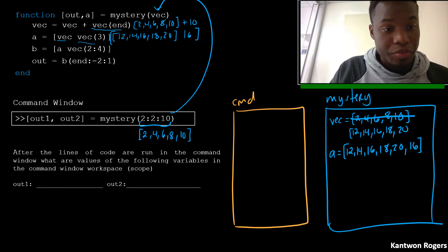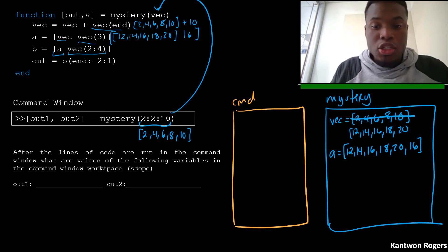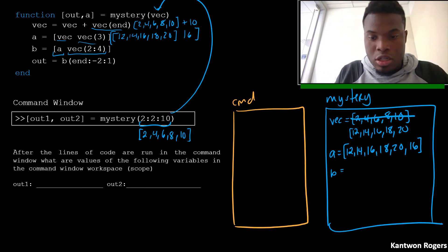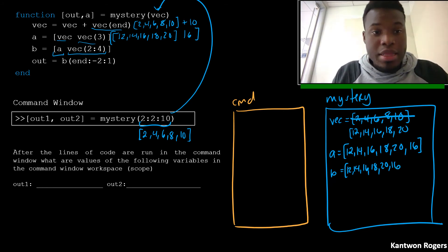Okay, so then on this next line here, we're doing some more concatenation. So we're concatenating our current vector A with our vec indexed at the second, third, and fourth position. So our current vector of A is 12, 14, 16, 18, 20, and 16. And then we're concatenating the second, third, and fourth element of our current value of vec. So the second is 14, 16, and 18. So we're concatenating that onto the end, 14, 16, 18.